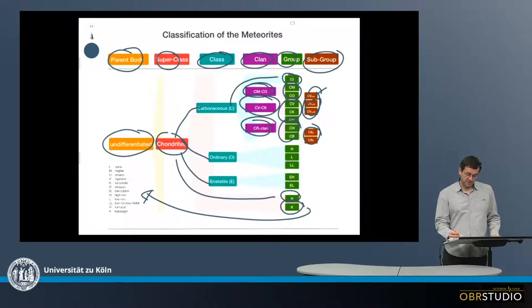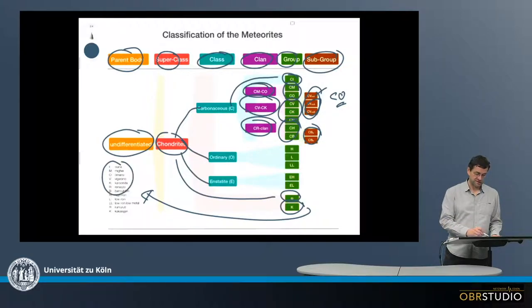Now the carbonaceous chondrites always have this C, which stands for carbonaceous, followed by, for example, an O. The second letter here means the type meteorite, which are all shown here to the left. So for example, in case of CO chondrites, this would be Ornans, or CI chondrites, this would be Ivuna, and so on.